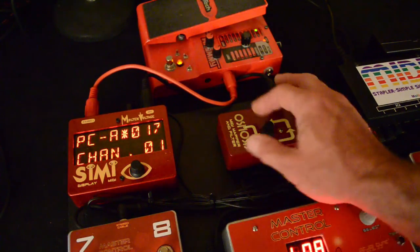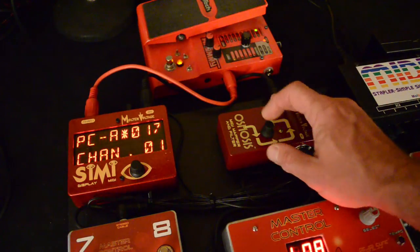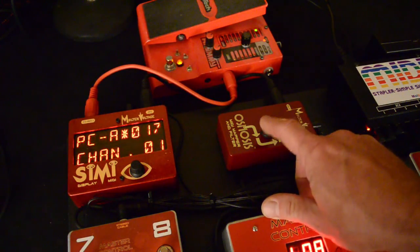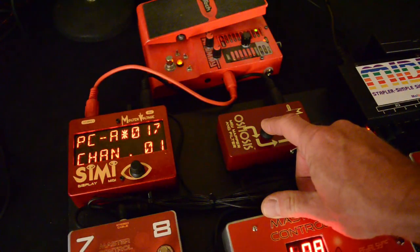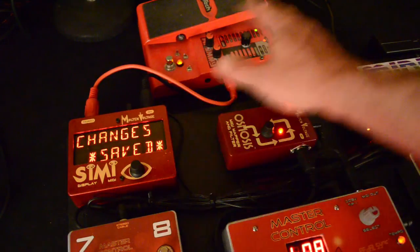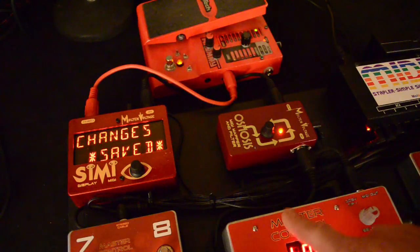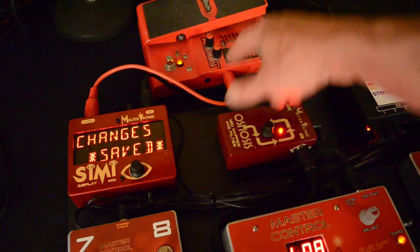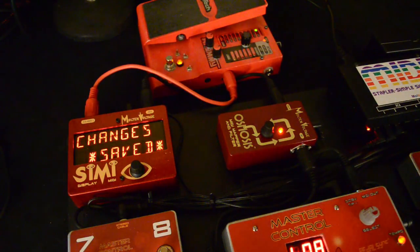And so there we are. We have the outgoing program change. And once we've got it where we want, we just hold down the button until it says change is saved. Now, each time we send that program change, it's going to send out, each time we send program change into Osmosis, it's going to send out that separate program change number 17. And that's basically all there is to it.